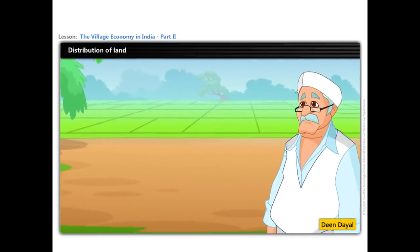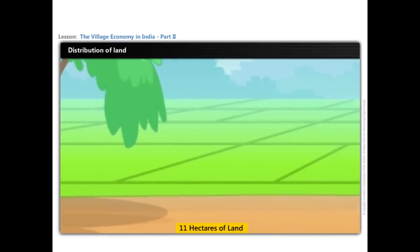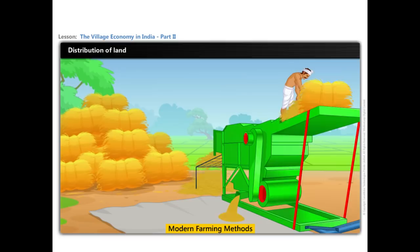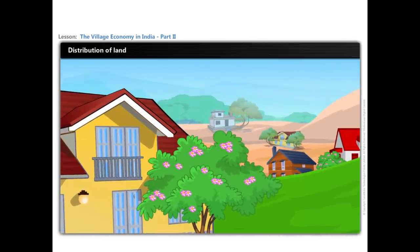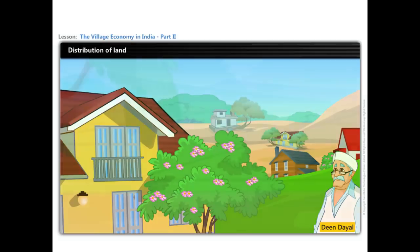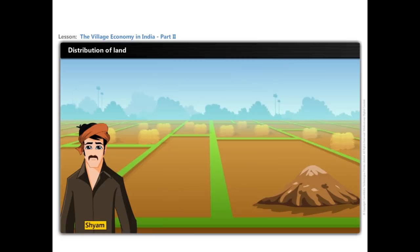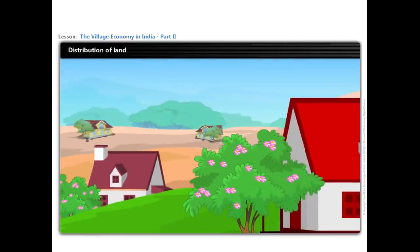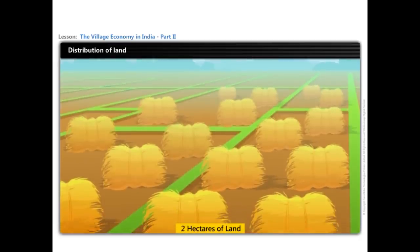This is Deen Dayal, a large farmer in the village of Palampore. He has 11 hectares of land which is intensively cultivated using modern farming methods. There are 10 other families in Palampore like Deen Dayal who cultivate more than 10 hectares of land. This is Sham, a medium farmer who cultivates his 4 hectares of land using modern farming methods. There are another 50 families like Sham who cultivate more than 2 hectares of land.